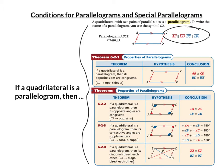We know that the opposite sides are congruent — in this case, BC equals AD and AB equals CD. We know that the opposite angles are equal: angle A and angle C are congruent, and angle B and angle D are congruent. We know that consecutive angles — meaning any two angles that are in order next to each other — are supplementary, because they're same side interior angles on the same side of a transversal between the parallel lines.